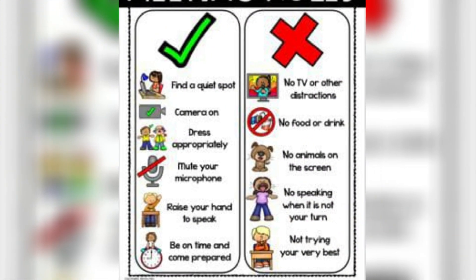Here I have taught you some of the basic rules of virtual classroom. To recap: find a quiet place to sit, keep your cameras on, dress up yourself properly, mute your microphones, raise your hands whenever you want to speak, be on time, and come always prepared. What you should not do: please do not switch on the TV or any other music or electronic items. You should not drink or eat anything during your virtual classrooms. You should not show any of your pet animals on screen while lectures are going on. Please don't speak when it is not your turn. And please don't sit quiet either — if you are unable to understand anything, raise your hand and take participation in the class to ask your doubts with your teachers.